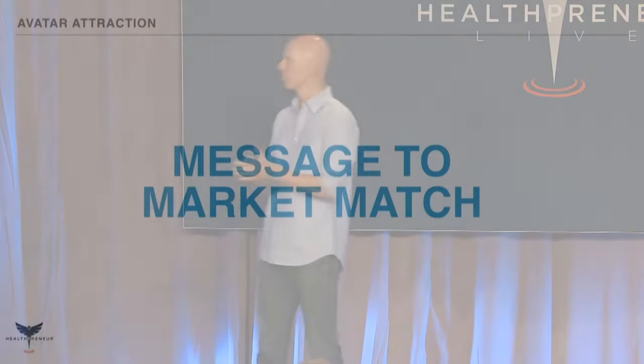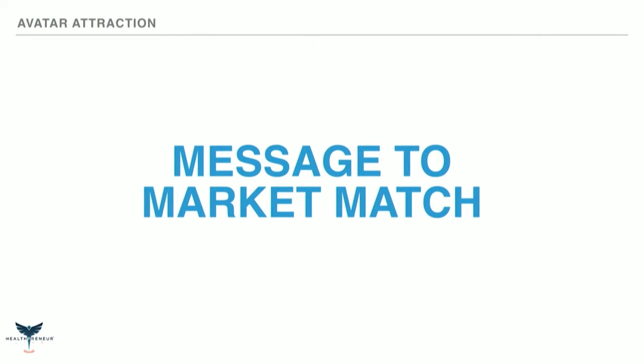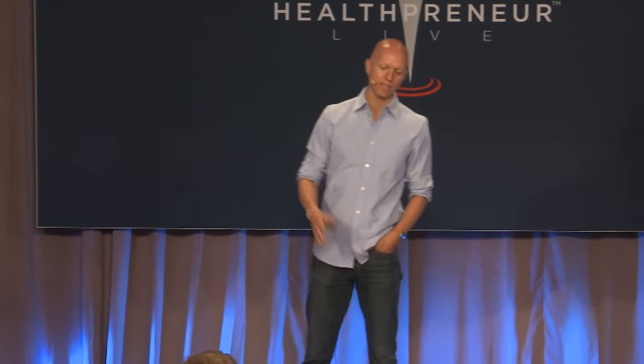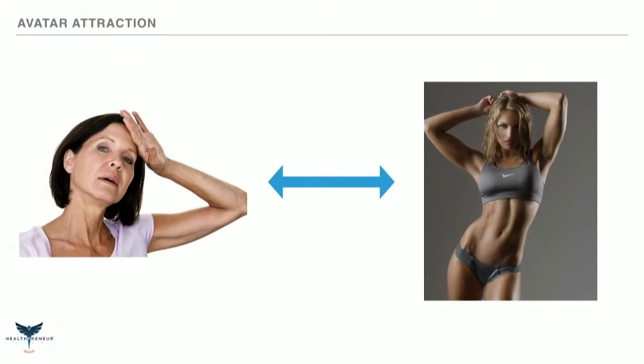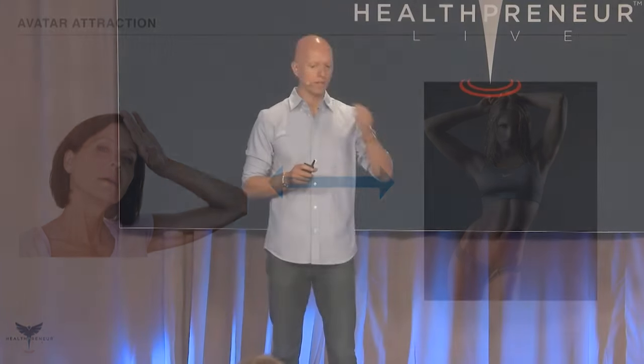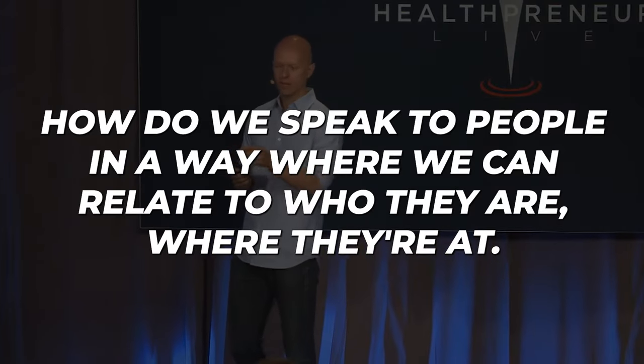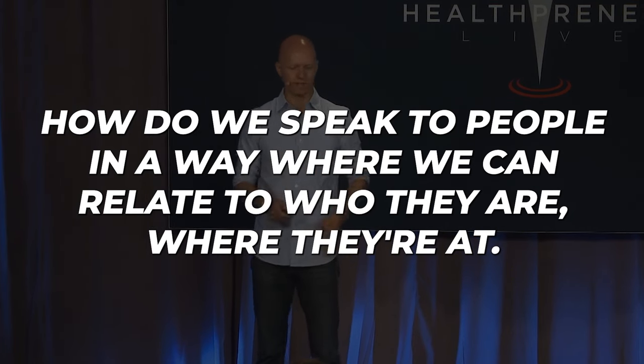That's what we're going to go through here, because it's really important to understand message to market match. For example, gentlemen, if you guys are in the market to buy some stuff and I've got a bra — who's in? It's not going to happen. It's incongruent. So what we want to think about is: if we're appealing to menopausal women, why are we using images that are incongruent with that? Using an image that never appeals to that type of woman is a problem. We want to speak to people in a way where we can relate to who they are and where they're at, because that's going to make a very big difference.